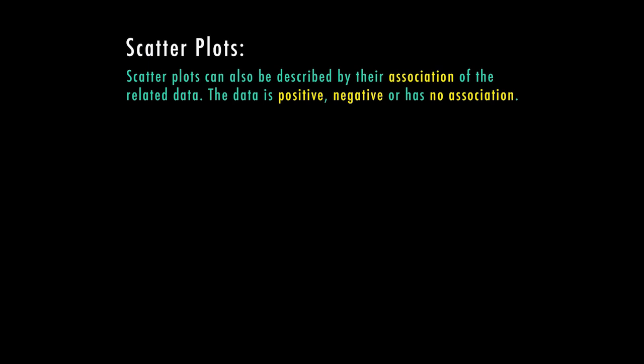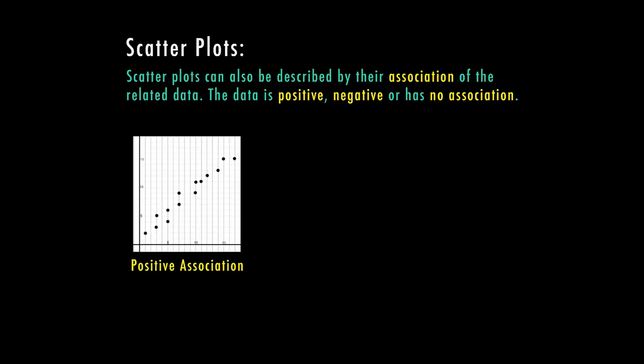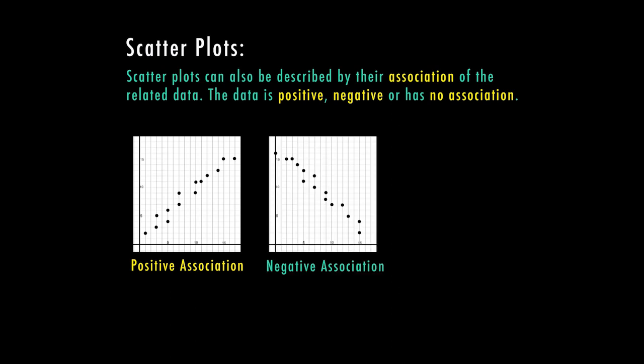Scatter plots can also be described by their association of the related data. The data is either positive, negative, or it has no association. So if both the data representing the x and the data representing the y are increasing, you're going to have a positive association. If the data for the x is increasing while the data for the y is decreasing, you're going to end up with a negative association.